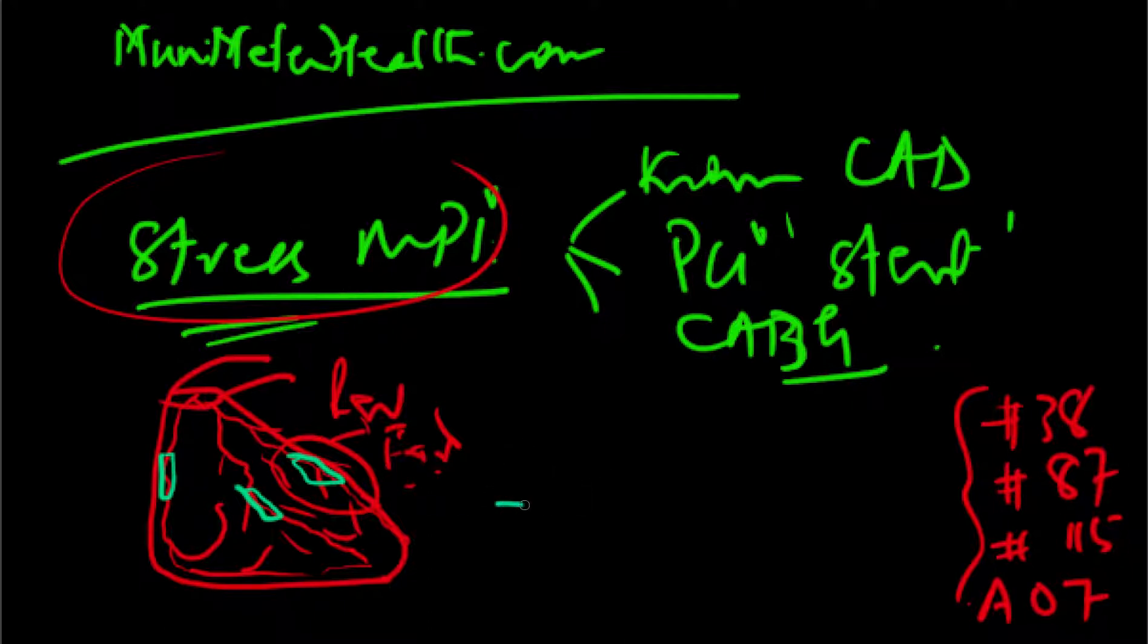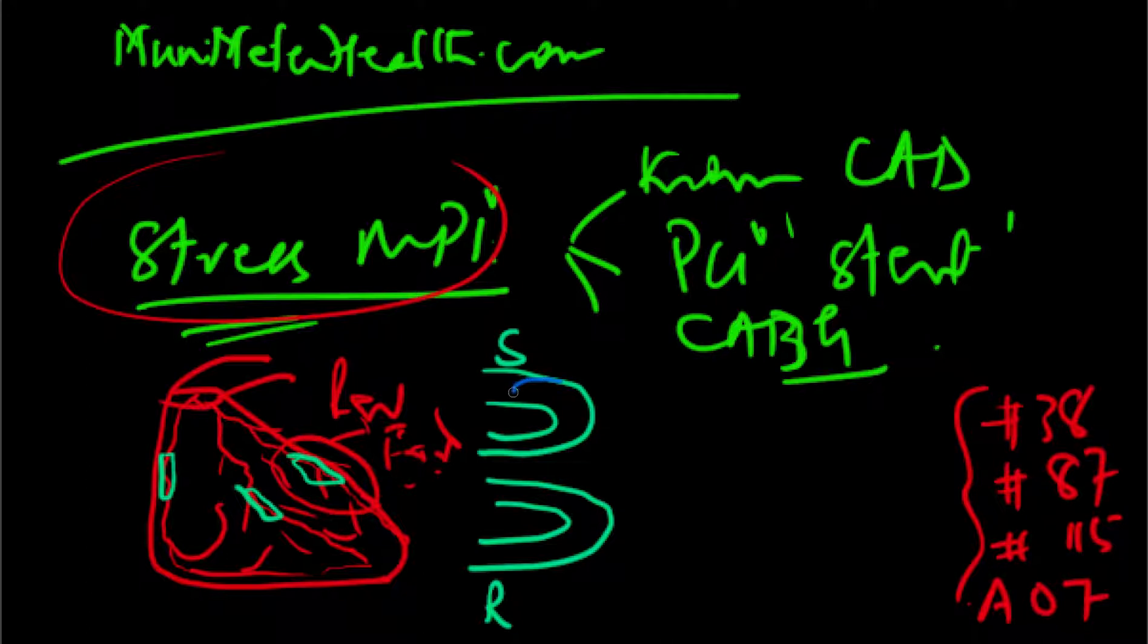Here I draw the heart in the stress images, and here in the rest images. A defect, say, develops somewhere in the inferior septal area, and then that tends to reverse. Here there is no defect. That reverses, so that's called a reversible defect. A reversible defect is ischemia.